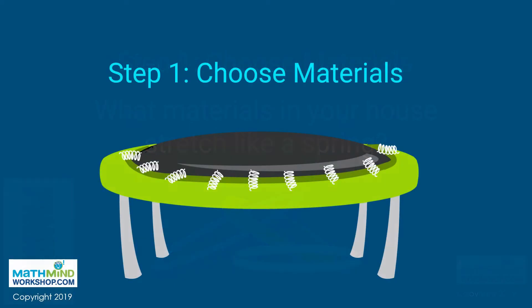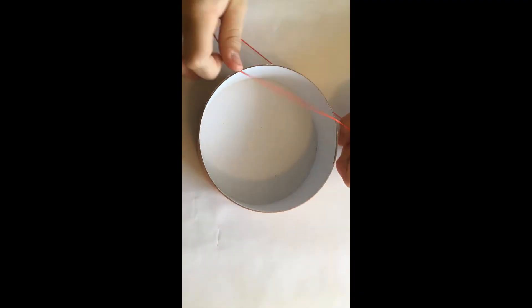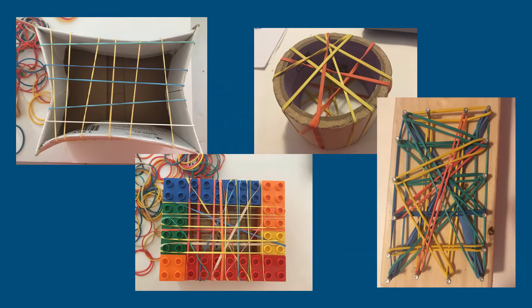For something to stretch out it needs to be attached to a frame of some sort, like the frame of a trampoline. For your engineering challenge it will help if your frame is open in the middle, like an empty box or a stand made out of building bricks or even a roll of tape. But it can also be made out of an object with pegs in it, such as nails in a board or sticks in the ground or whatever idea you might have.